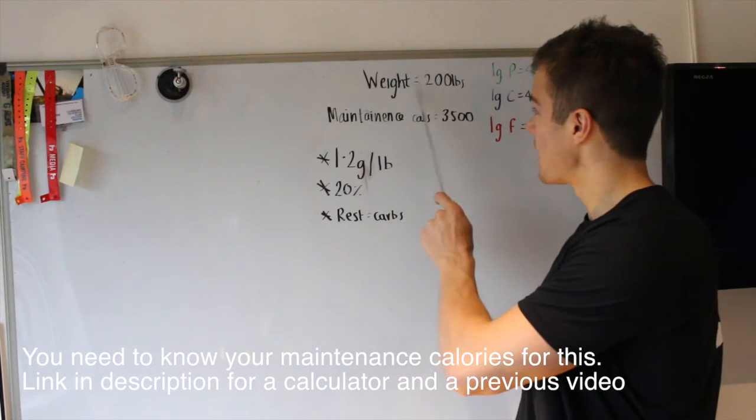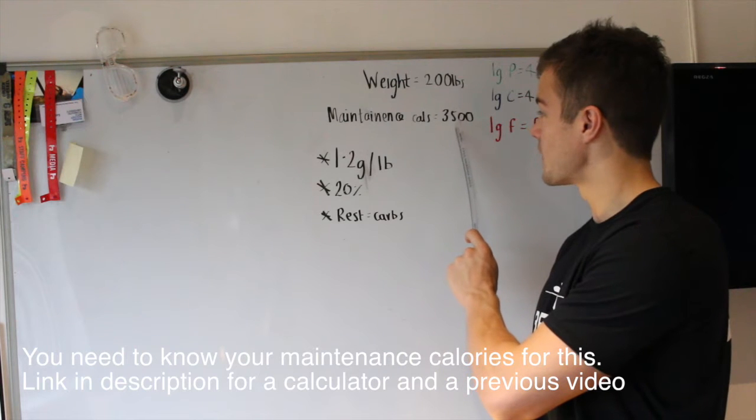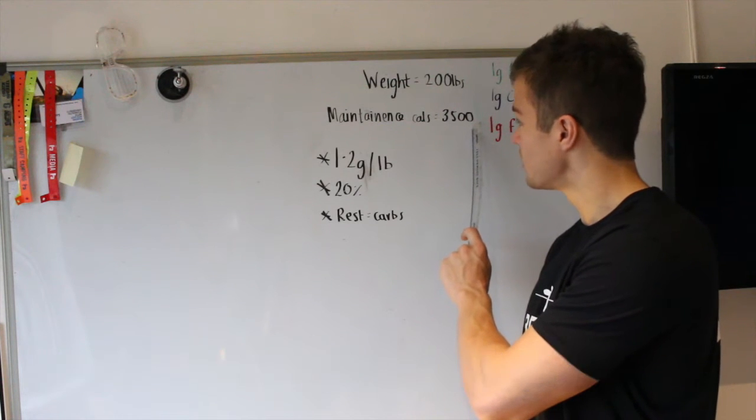We'll quickly refresh. My weight at the end of my bulking was 200 pounds, so we used that nice, easy number. And my maintenance calories at that weight was 3,500 calories per day.